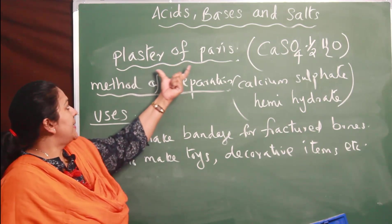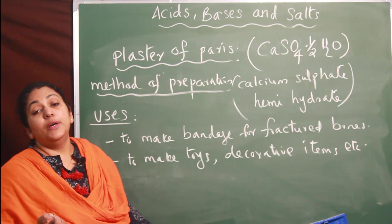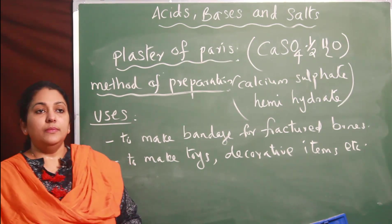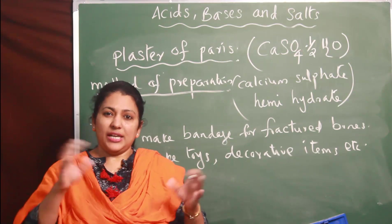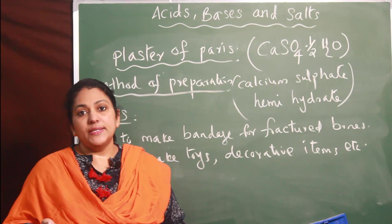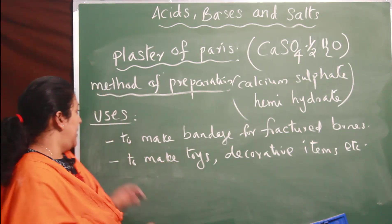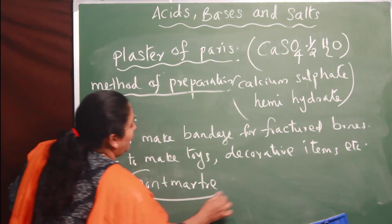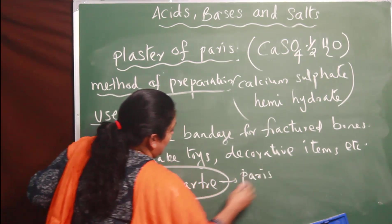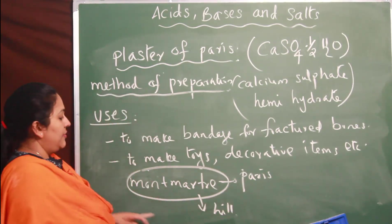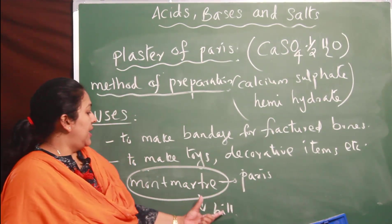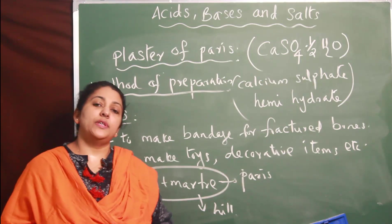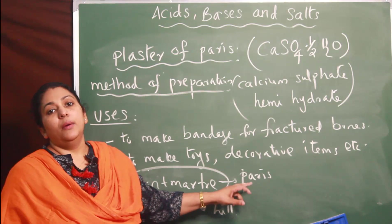Now, how did the name plaster of Paris come about? The name is derived from the fact that a large collection of gypsum is found in Paris, at a hill called Montmartre. A lot of deposits of gypsum are found there, and that is why the name is plaster of Paris.